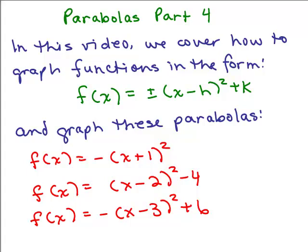This is part 4 of parabolas and we go over graphing parabolas in this form: f(x) equals plus or minus (x minus h) squared plus k, and we graph the following 3 parabolas.